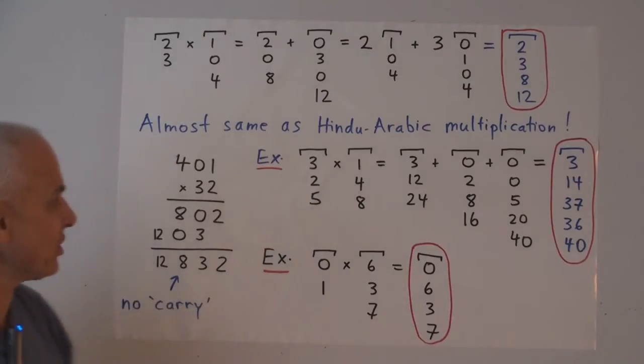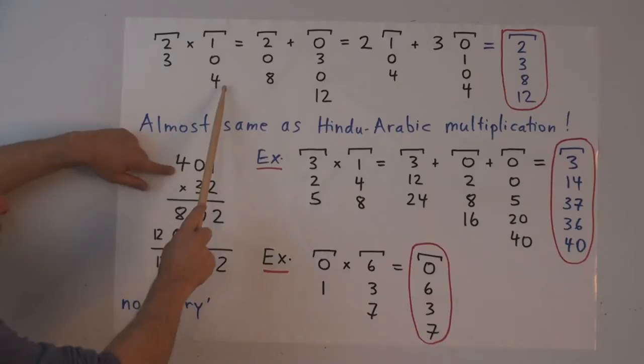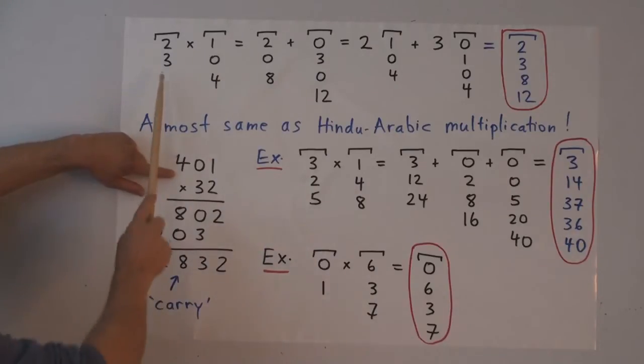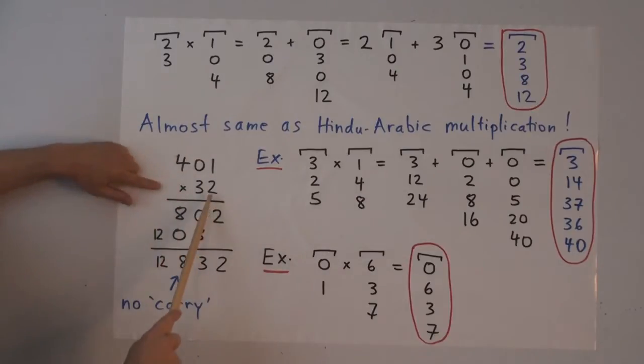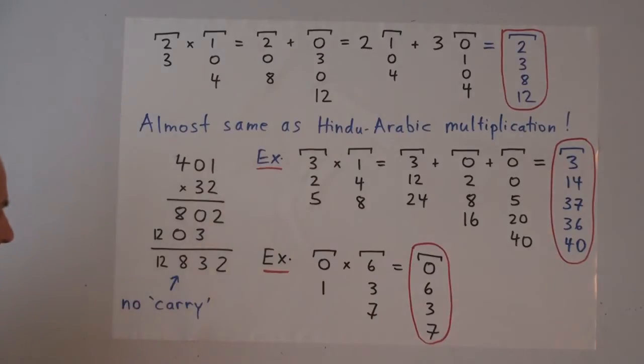Why is that the same as Hindu-Arabic multiplication? Well, suppose we wanted to multiply the numbers, 401, this one read up, times this number, 32. In ordinary multiplication, we would use this 2 and multiply it by 401 to give us 802. And then we'd multiply by 3, 3, 0, 12, and shift everything over by 1 because we're actually multiplying by something in the tens spot. And then we add the ones, the tens, the hundreds, the thousands.